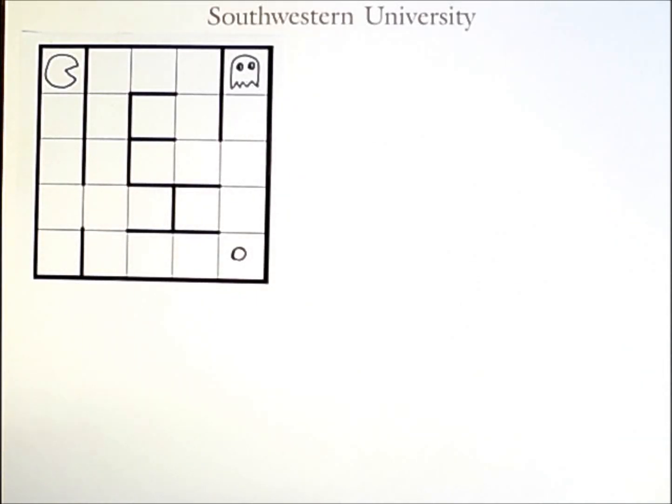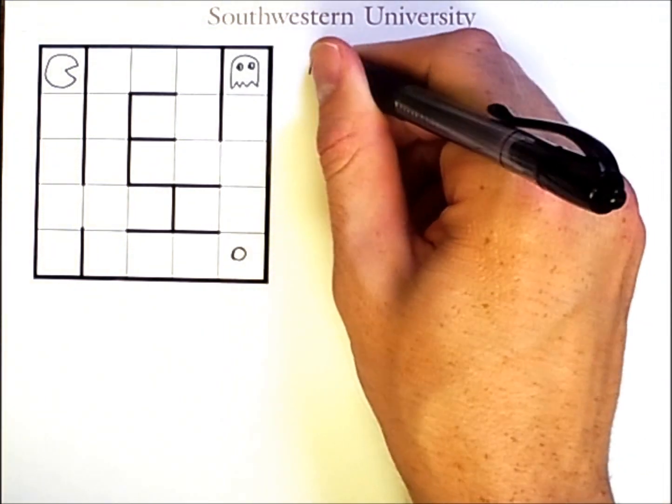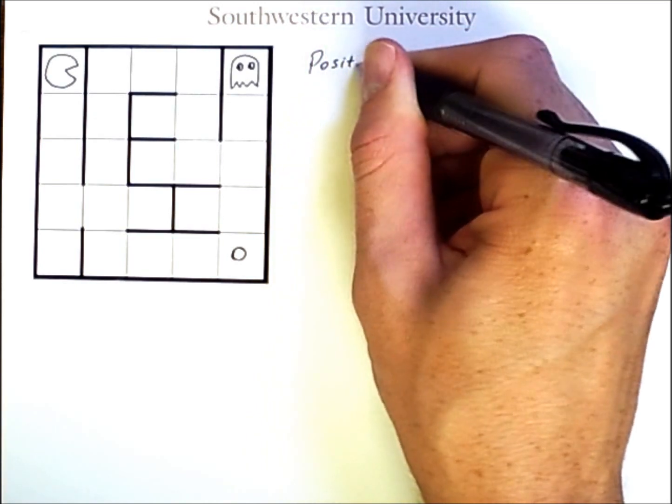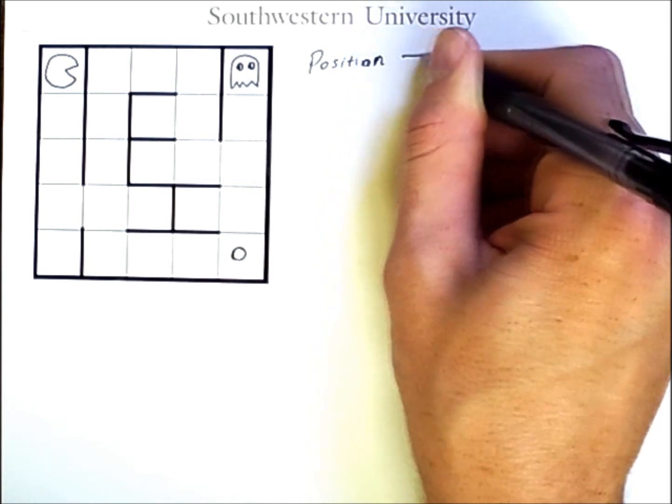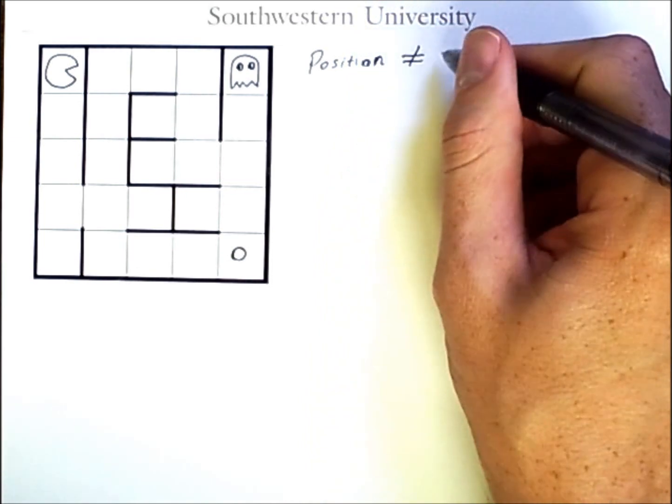The point of this video is to prevent you from holding a common misconception. In the previous videos, an agent had to find its way through a maze, and we searched through positions in that maze. However, position is not the same as state.